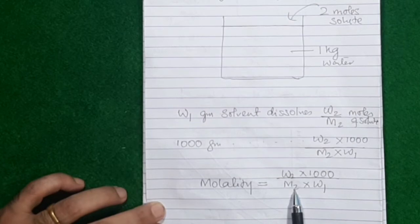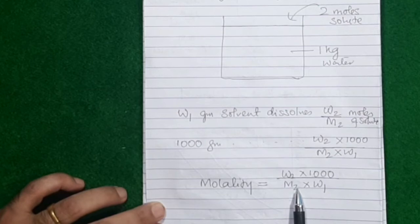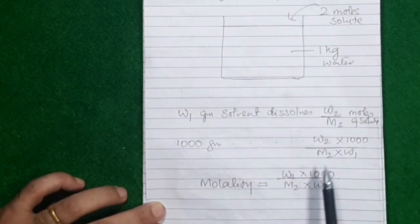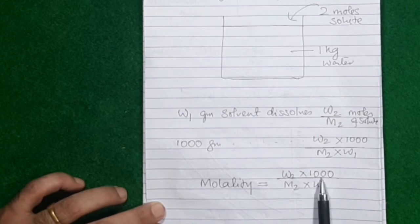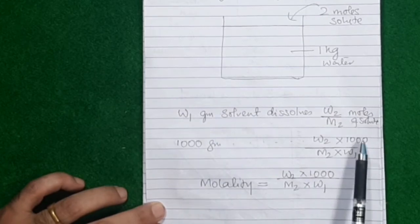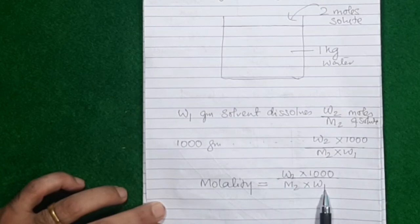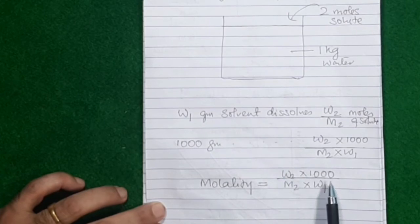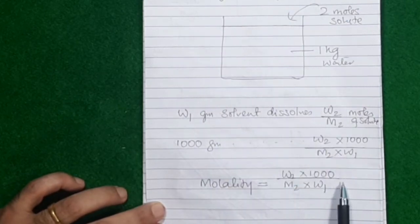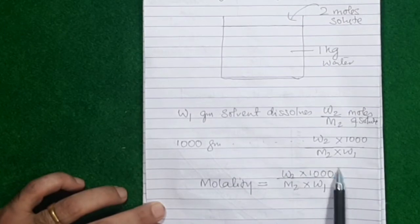So molality = (w2 / m2) × (1000 / w1). Mass of solute is divided by molecular mass of solute to get number of moles, then divided by mass of solvent and multiplied by 1000 to get the number of moles in 1000 grams of solvent — and that number of moles in 1000 grams of solvent is molality.